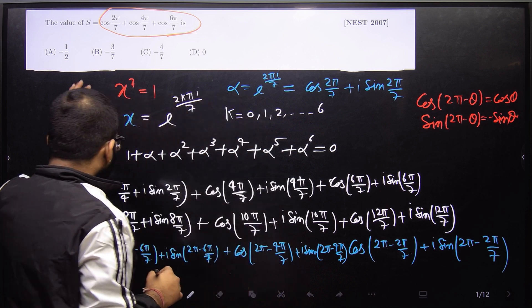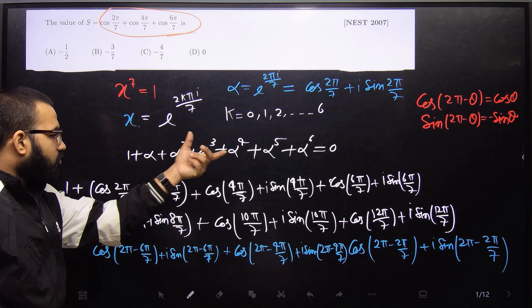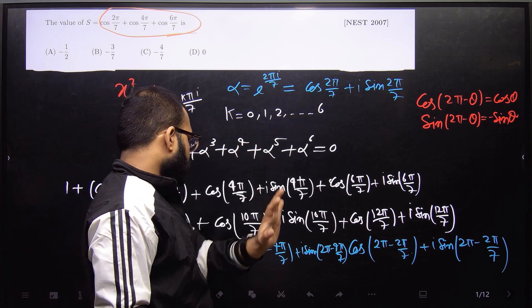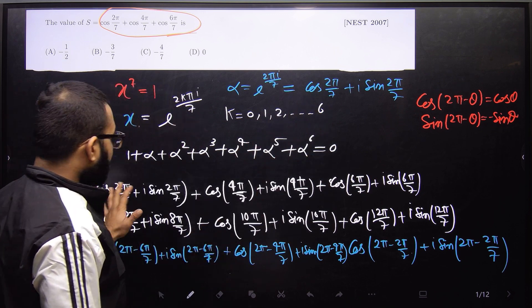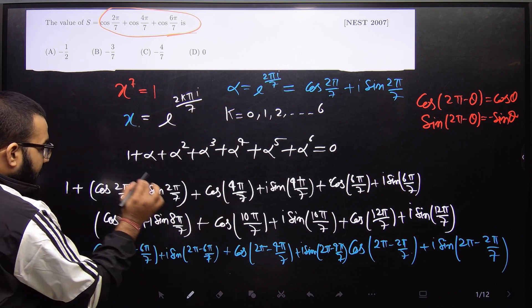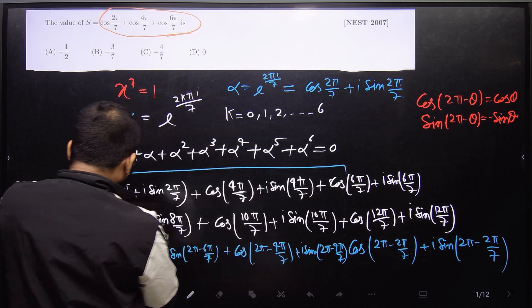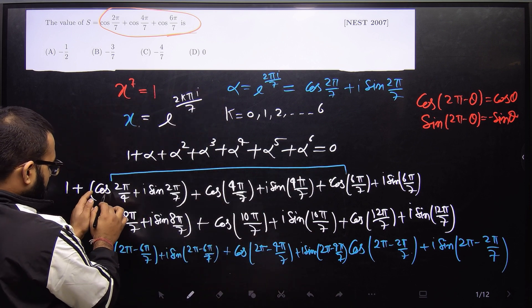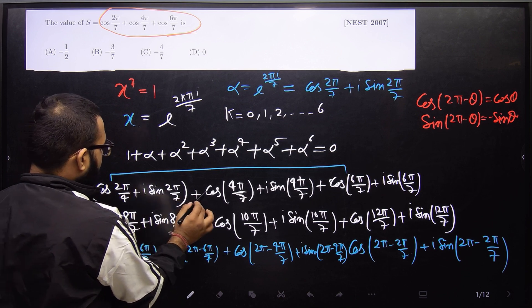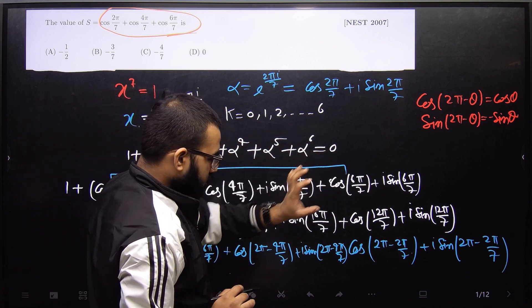So firstly we observe that this is a root of unity problem, and the sum of roots equals 0. Therefore 1 + α + α² + ... + α⁶ = 0. We then write each root in polar form. Our favorable terms come from the real parts: cos(2π/7), cos(4π/7), and cos(6π/7) from α, α², and α³.